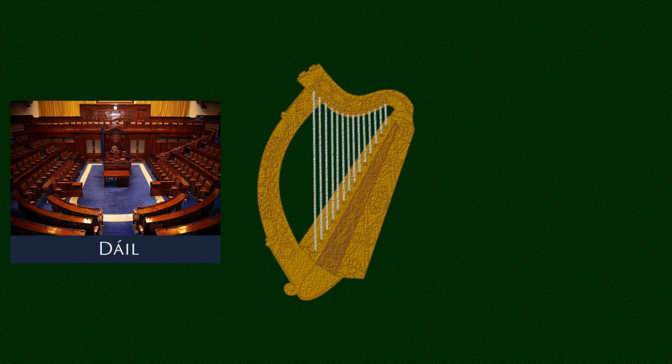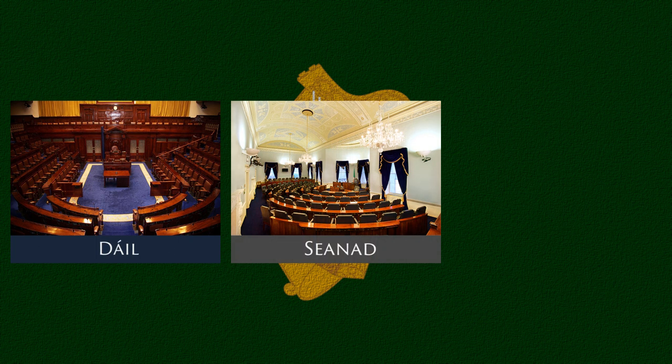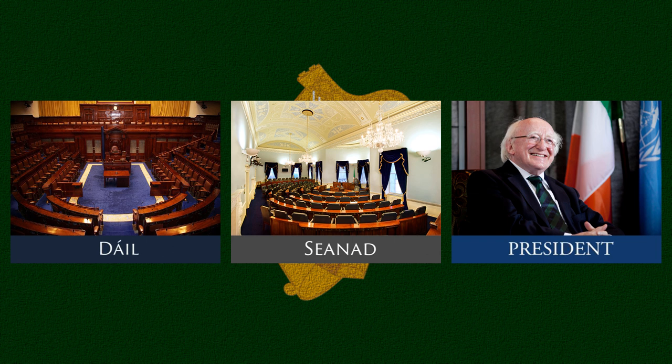The lower house of the Irish Parliament is called the Dáil — this is where all the power is. The Irish Prime Minister needs to command a majority in the Dáil. Ireland also has an upper house called the Seanad, and also a President. The current President is Michael D. Higgins. The Seanad and the President don't have a lot of power, so I'm not going to be talking about them in this video.